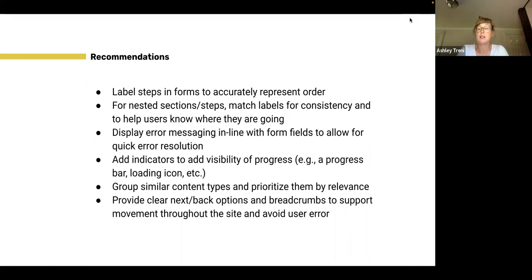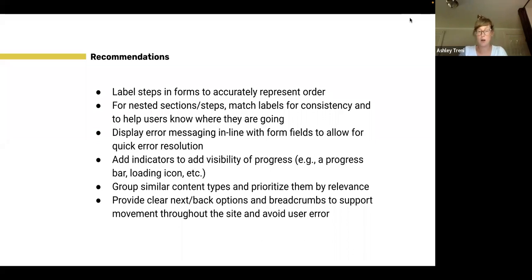Grouping similar content types and prioritizing them by relevance connects back to sections and steps — thinking about the order of operations, the order in which you're asking questions. Similar to navigation, providing clear next and back options as well as breadcrumbs in forms also supports movement through the forms and avoids user error. In case someone needs to go back and fix something, they can navigate back to a previous section. Building in those navigation touch points gives users flexibility as they engage with these resources.